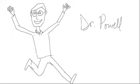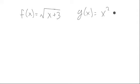Welcome to a lesson with Dr. Powell. Let's look at another way we can combine functions. What if we had a function f of x equal to square root of x plus 3, and suppose we have another function, g of x, which is equal to x squared plus 4.